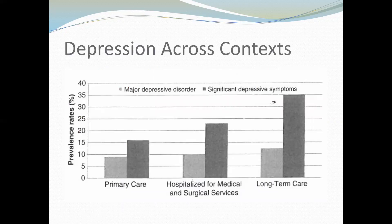In older adulthood, the setting makes a big impact in predicting depression. The light bars in this graph represent major depressive disorder, and the dark bars represent significant depressive symptoms not necessarily meeting a diagnosis. There is relatively low prevalence of depression in community-dwelling older adults, but much higher depressive symptoms for those who have been institutionalized.